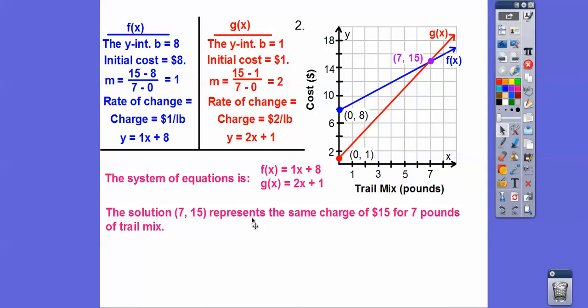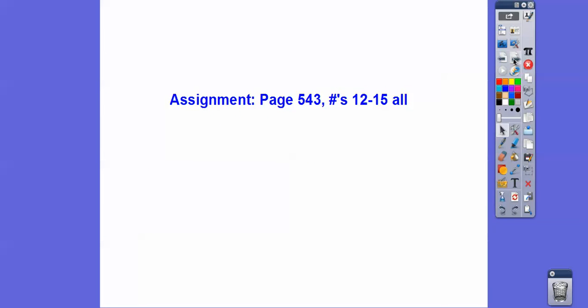And that solution is seven fifteen. It represents the same charge of fifteen bucks for seven pounds of trail mix. And if you guys are in my class, I would assign that for your homework.